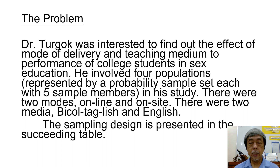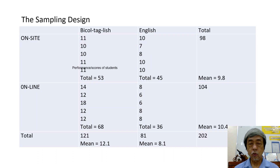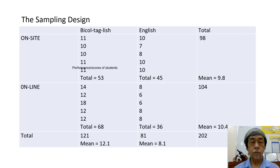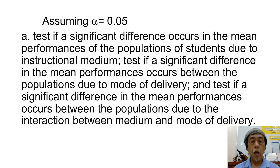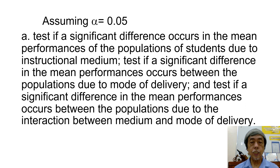The sampling design is presented in the succeeding table. We have a two-by-two design, two rows and two columns. The column means and the sample means are already presented in the table. Assuming alpha equals 0.05, letter A: test if a significant difference occurs in the mean performances of the populations of students due to instructional medium.